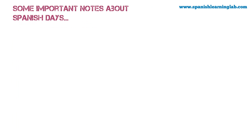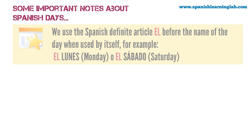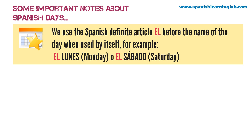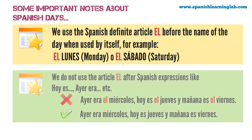Some important notes about Spanish days. We use the Spanish definite article EL before the day of the week when used by itself, for example el lunes, el sábado. We do not use the article EL after Spanish expressions like hoy es, ayer era, etc. It is incorrect to say ayer era el miércoles, hoy es el jueves, y mañana es el viernes. It is correct to say ayer era miércoles, hoy es jueves, y mañana es viernes.